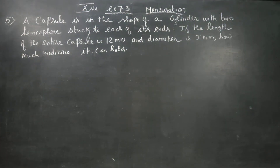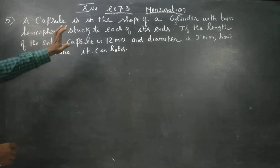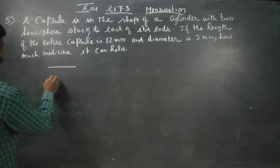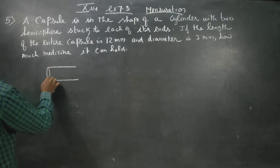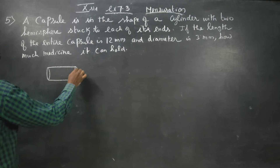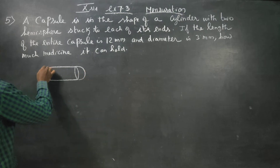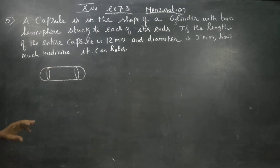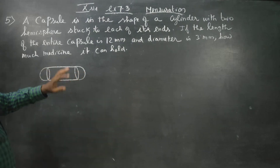In exercise 7.3, question 10 standard: a capsule is in the shape of a cylinder.